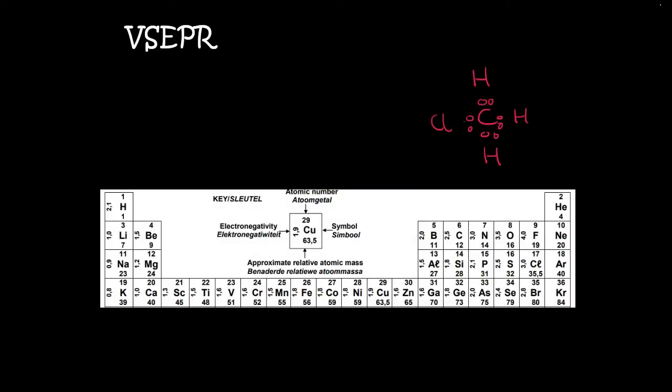And so for the shape, or the name, we could have a look at the number of electrons around the central atom. Well not the number of electrons, but the number of pairs. And so there's 4 groups. Are there any lone pairs? Oh, I forgot Cl's remaining electrons.